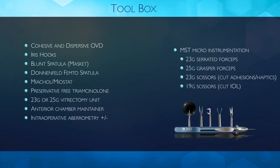The most important thing is that we have our toolbox available. Before you start these cases, make sure you have cohesive and dispersive OVD, iris hooks, spatulas of choice, intracameral miotics so you can adjust the pupil size and dilation, preservative-free triamcinolone or equivalent so you can visualize vitreous — because doing a thorough vitrectomy is key, especially when there's an open capsule. Have your anterior chamber maintainer available and MST micro-instrumentation, or something similar, so you can grab, stabilize, and cut IOLs using the most advanced microsurgical techniques.